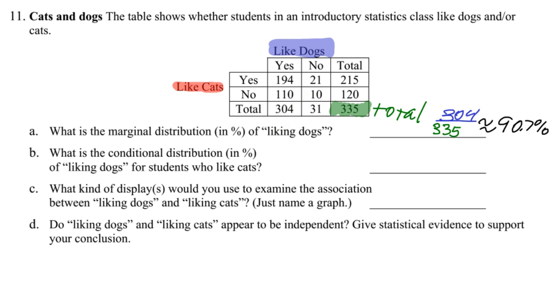So now I'm taking a look here for the second question. Erasing my 304 here. And now let's see. What is the conditional distribution of liking dogs for students who like cats? Now that's huge. So I'm going to highlight this in orange right here. So they want me to look only at these students who like cats. So if I go to people who like cats, those are going to be the people that say yes.